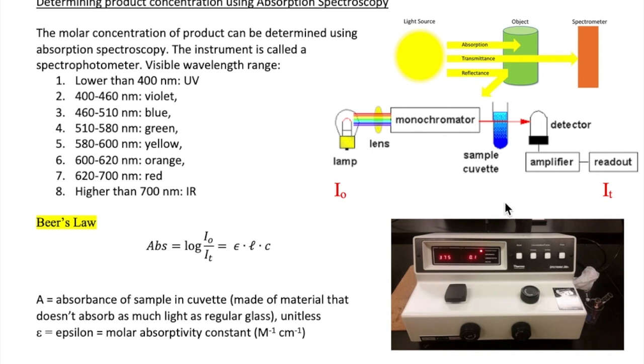is an instrument that allows us to measure how much light is being absorbed by a sample. The spectrophotometer we will use in this lab is called a SPECT 20 and is shown here.